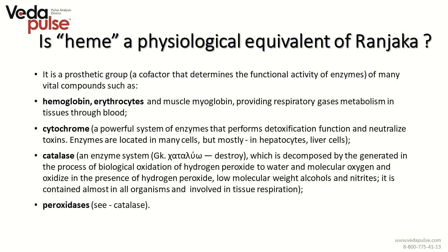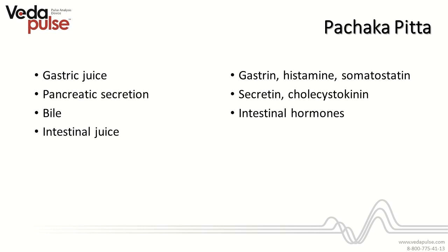Domination of Pitta Dosha means domination of five fire sub-doshas which form Pitta. Phranjaka Pitta imbalance, typical for this constitution type, leads to different pathological states connected with blood. Phranjaka Pitta is responsible for hormonal regulation through hormones such as gastrin, histamine, somatostatin, secretin, cholecystokinin, and intestinal hormones, and gastric secretion presented by gastric juice, pancreatic secretion, bile and intestinal juice. Phranjaka Pitta also represents the immune system of skin, melatonin and melanin production, and the vascular system of skin.